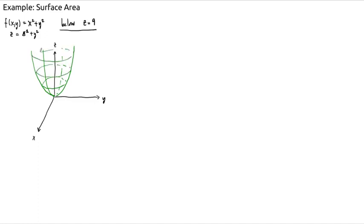Alright, and again, the domain of this function, if the function is mapping the points up to this paraboloid, the domain of this function is the entire plane, but we've got this extra piece of information here. We only want to find the surface area of the portion of this surface that lies below the plane Z equals 9.